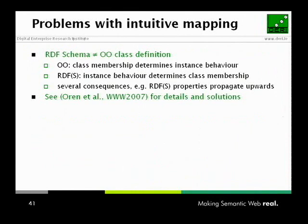Unfortunately, the intuitive mapping doesn't really work because OO and RDF/RDFS live in completely separate worlds. In OO, class definitions are basically templates — you define a class and instances have to follow those properties. In RDF and RDFS, the schema works the other way around: any resource can have any properties, and you look at instances to determine which classes they belong to — it's a bottom-up approach. These mismatches cause several problems, which you can read about in our paper, along with why Ruby is a very nice language to address them.